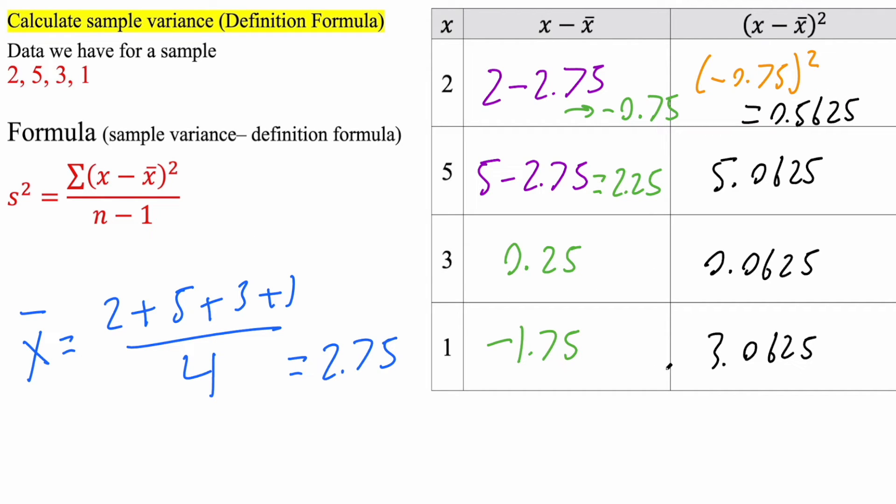So we need to get the summation of that. So what we got to do is add it up. So we do 0.5625 plus this number, plus this number, and we're going to get 8.75.